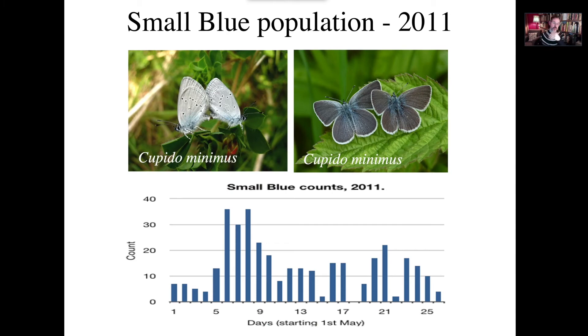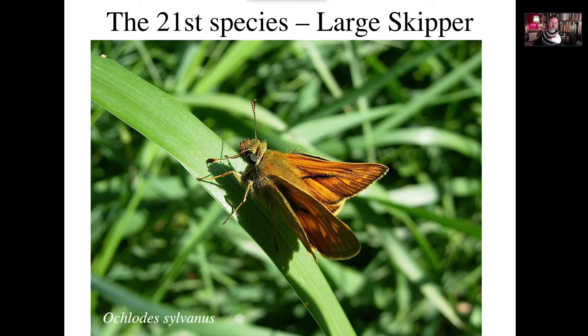The small blue population was clearly established by 2011 — immensely pleasing. By this stage we reached 21 species. I include this because this particular individual was sighted three weeks earlier than any other butterfly of that species within the UK on our site — another anecdotal piece of information showing that climate change was beginning to have an impact.